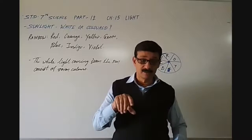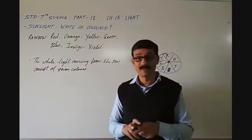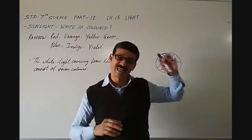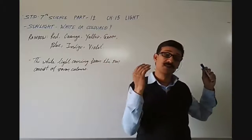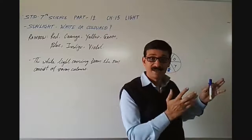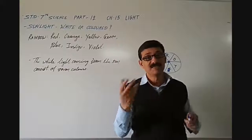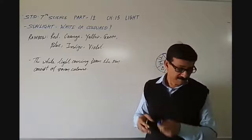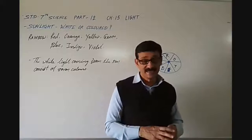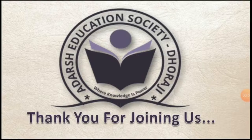With this we are ending this part. We have covered many things — from light travelling in a straight line, to activities with a plain mirror where we get a virtual image, to spherical mirrors, to lenses and the types of images formed, and now sunlight and its seven colors. We will meet you in the next chapter. Thank you for joining us. Take care of yourselves and we will meet you in the next session.